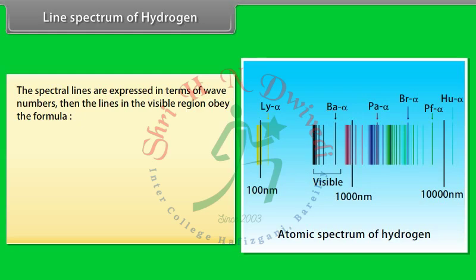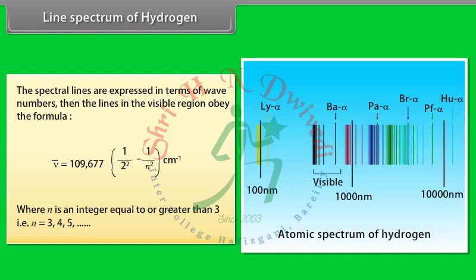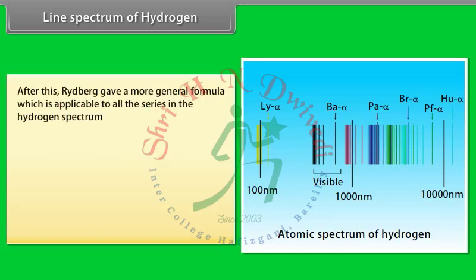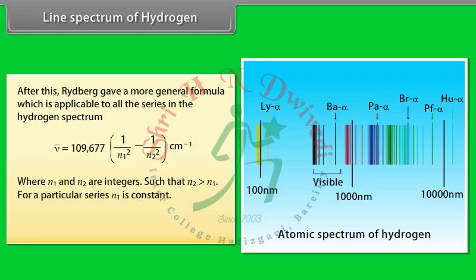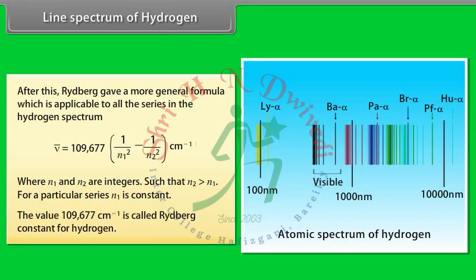The spectral lines expressed as wave numbers in the visible region obey the formula: wave number = 109,677 × (1/2² − 1/n²) per centimeter, where n is an integer equal to or greater than 3. Rydberg gave a more general formula applicable to all series in the hydrogen spectrum: wave number = 109,677 × (1/n₁² − 1/n₂²) per centimeter, where n₁ and n₂ are integers with n₂ > n₁. The value 109,677 per centimeter is called the Rydberg constant for hydrogen.